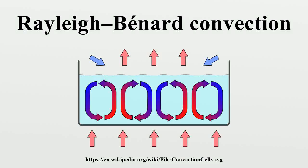Rayleigh-Bénard convection is a type of natural convection occurring in a plain horizontal layer of fluid heated from below, in which the fluid develops a regular pattern of convection cells known as Bénard cells. Rayleigh-Bénard convection is one of the most commonly studied convection phenomena because of its analytical and experimental accessibility. The convection patterns are the most carefully examined example of self-organizing non-linear systems.